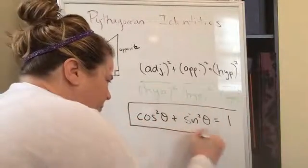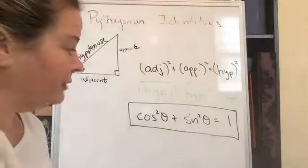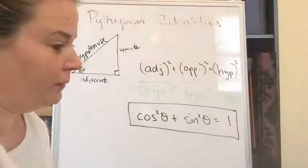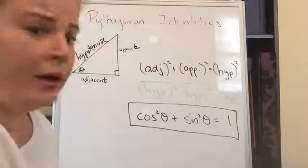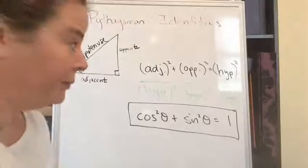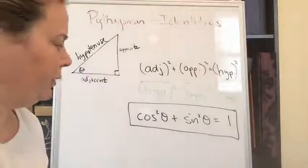This is Pythagorean's identity. It's an identity you're going to use a lot in this class, so you should get used to it. Sine squared plus cosine squared equals one. Now, there are different forms of this identity that we'll be using.